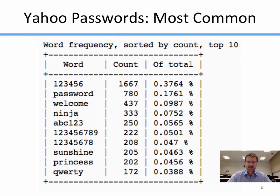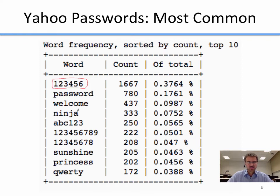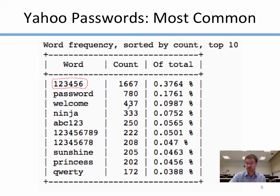So in that list of 442,000 passwords, what were the most common passwords? The most common password, used by 1,667 people, was '123456.' The next most common was 'password,' followed by things like 'welcome' and 'ninja' — I would have never thought ninja would be a common password, but apparently it is. As you look down the list, you see these are all commonly used passwords because lots of users chose them. Users tend to pick common passwords, and sometimes they all pick the same password without even realizing it.